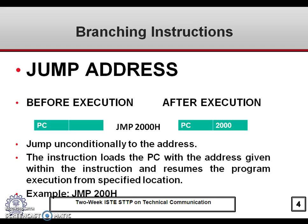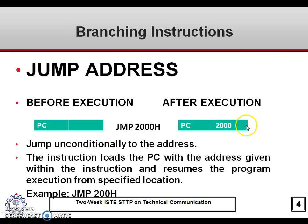Now let us look at the jump instruction. The instruction is JMP 2000H. Here the program wants to change the sequence and begin execution from address 2000H. Before execution, the program counter content is not important. But once the instruction is executed, the content of the program counter becomes 2000H, and program execution will start from memory location 2000H.